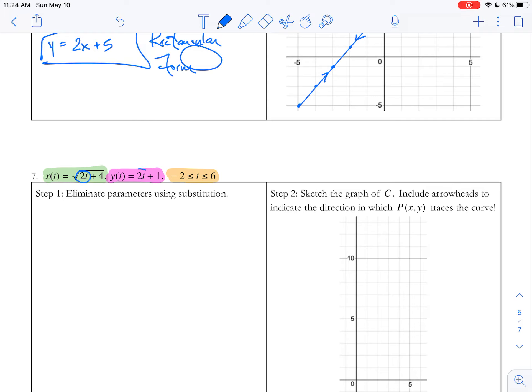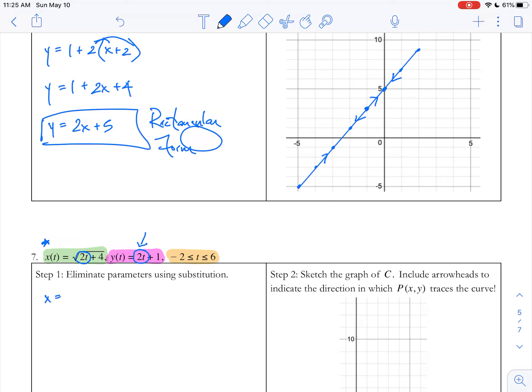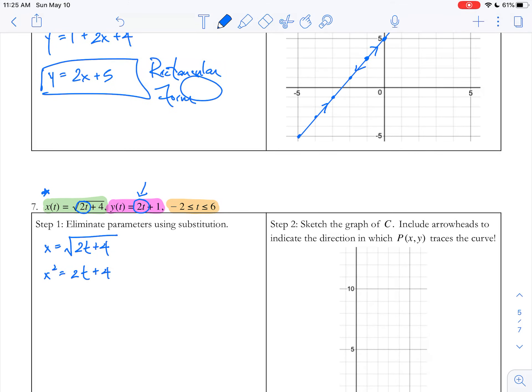I'm looking at what's the same in both equations and I notice there's 2t here and 2t here. I'm going to start with the green equation, get 2t by itself, and then plug that into the pink equation. So x = √(2t+4). I'll square both sides to get x² = 2t+4, then subtract 4.